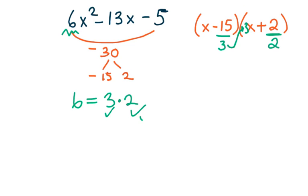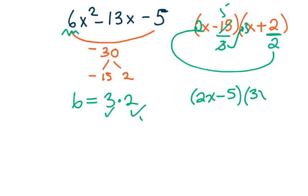And so we'll get a final answer that looks like 2x, I'm just sort of copying what's up here, minus, and 15 divided by 3, this is going to be a 5 and a 1, minus 5. And let's see, we'll get 3x here, and then 2 divided by 2 is just 1.